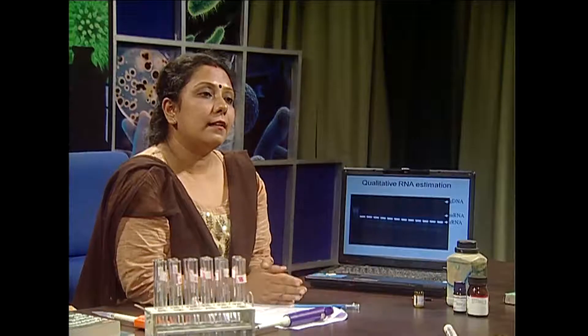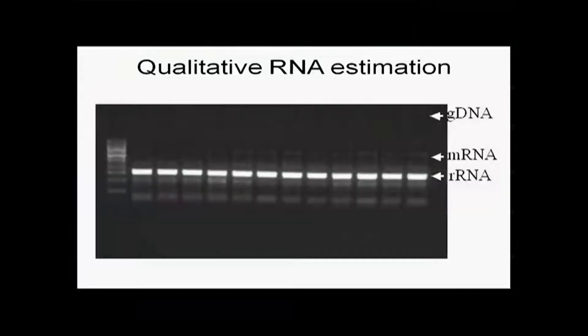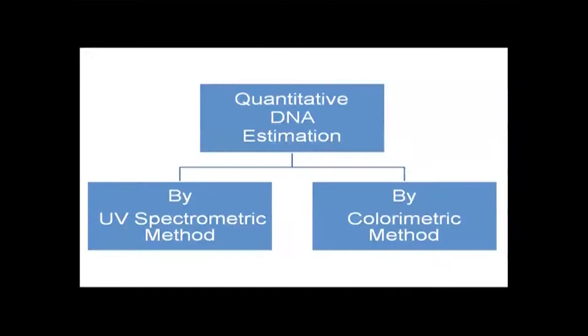It may be either a qualitative or quantitative method. Like DNA, RNA can also be observed by agarose gel electrophoresis, but the position of RNA band is different from the position of DNA band. Quantitatively, RNA can be measured by UV spectrometric method as well as the colorimetric method.